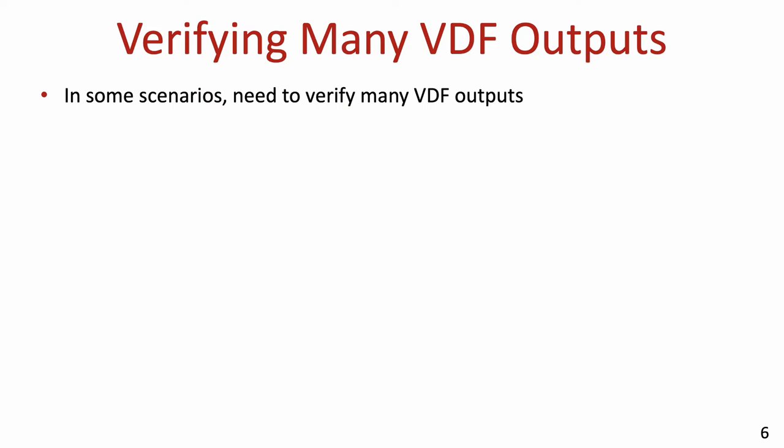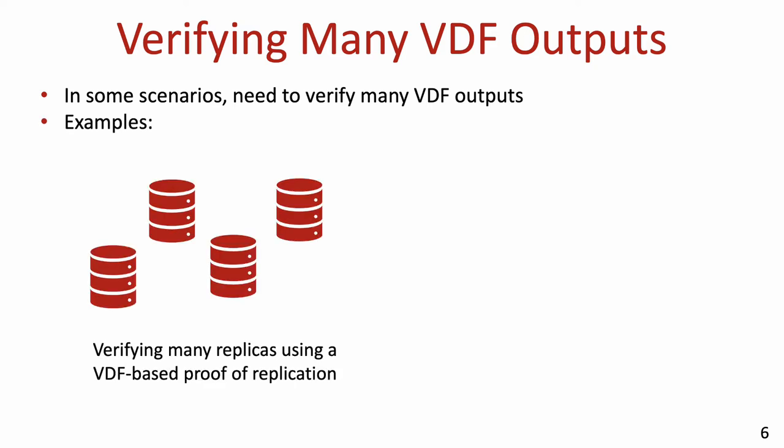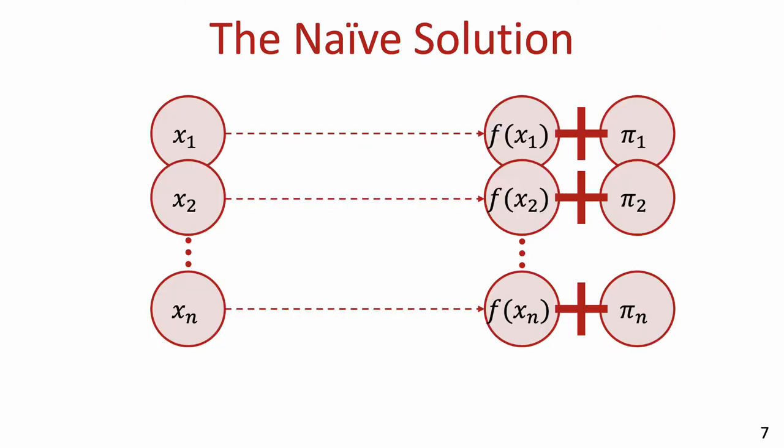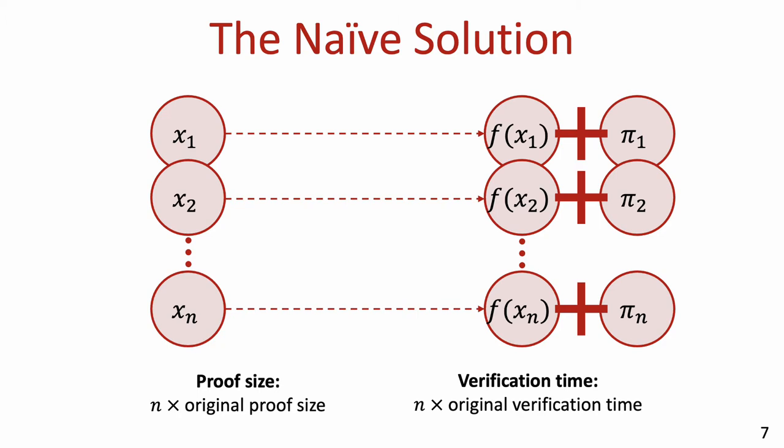In some scenarios, one might need to verify not just one, but many VDF outputs at the same time. As an example, consider verifying using a VDF-based proof of replication that some storage service maintains many copies of the same file, or verifying the randomness generated by some VDF-based randomness beacon over many epochs. The naive solution is to simply use the per-instance verification procedure of the VDF and verify the outputs one by one. The downside is that it incurs a blow-up in both proof size and verification time which is linear in the number of outputs to be verified. The question is: can we do better than that?